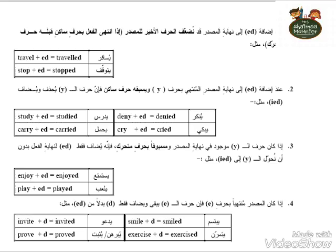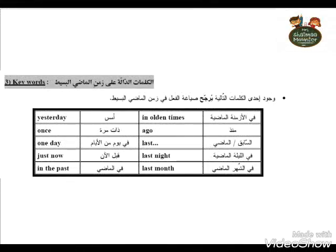For 'stop,' which ends in O-P, we double the last letter and add 'ED' to get 'stopped.' If the verb ends in Y, we look at the letter before Y — if it's a consonant, we remove the Y and add 'IED,' like 'study' and 'carry.' But if the verb ends in a vowel plus Y, like 'enjoy' or 'play,' we just add 'ED' without removing the Y. Time markers for past simple include: yesterday, once, one day, just now, in the past, in order, in olden times, ago, last night, and last month.